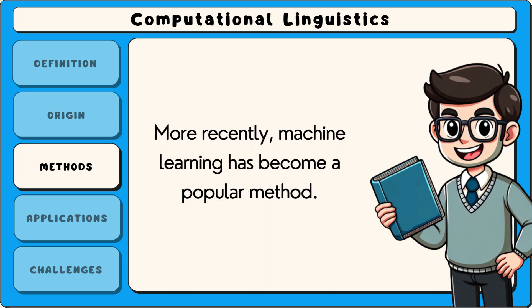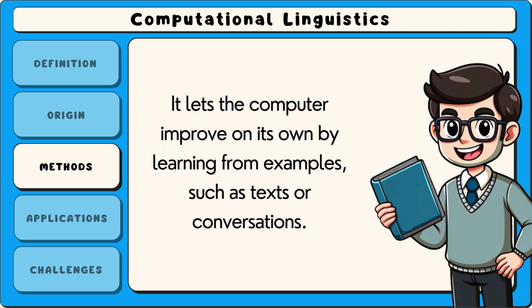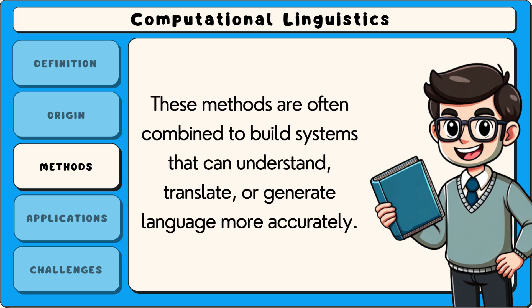More recently, machine learning has become a popular method. It lets the computer improve on its own by learning from examples, such as texts or conversations. These methods are often combined to build systems that can understand, translate or generate language more accurately.